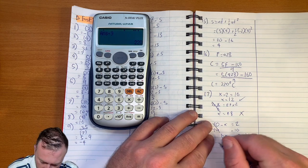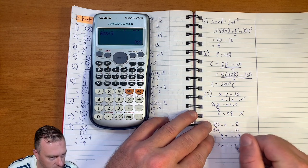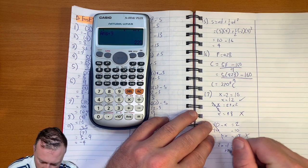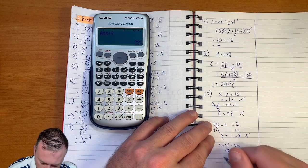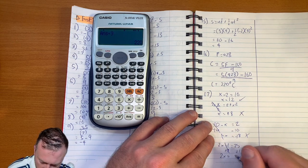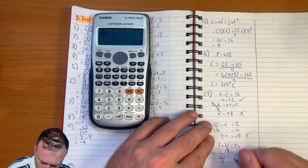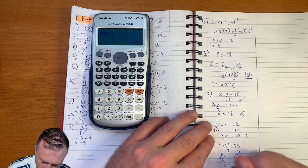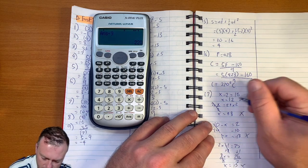And then 2X minus 1 equals 25. So plus 1. Plus 1. So 2X equals 26. Times this side by 2. X equals 13. Not one. So that's the only one.